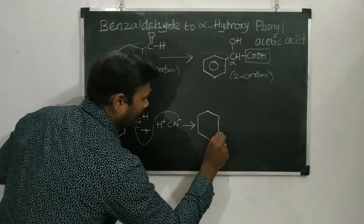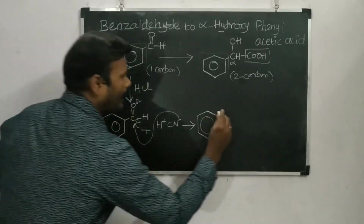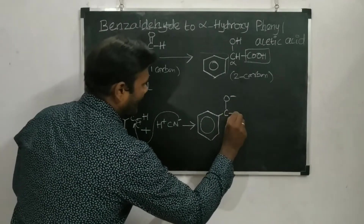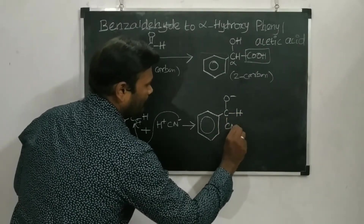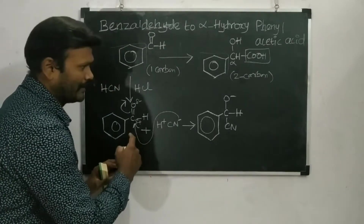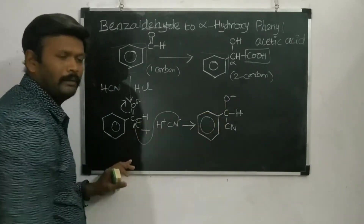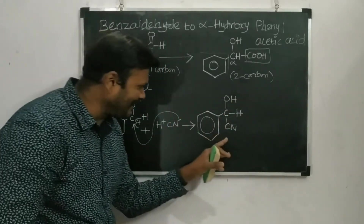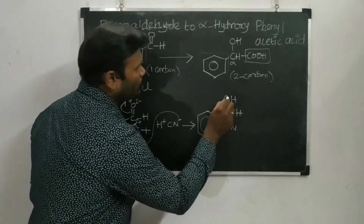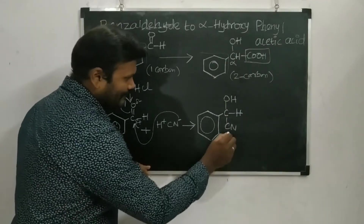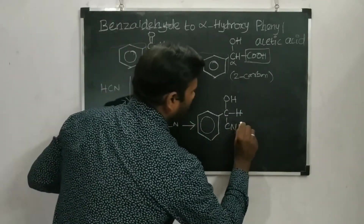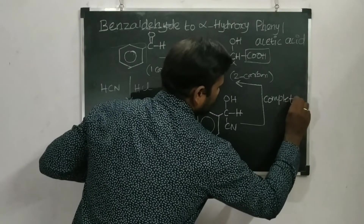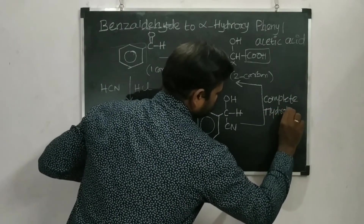The product formed is a cyanohydrin: the phenyl ring is there, with C–O⁻ (which then picks up H⁺ to give OH), and CN attached to the alpha carbon. So the product has a phenyl group, an OH group, and a CN group on the same carbon — that is our cyanohydrin intermediate.